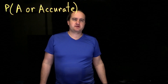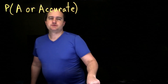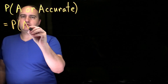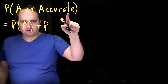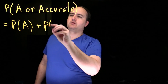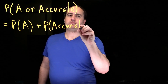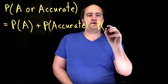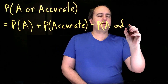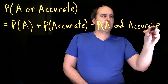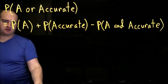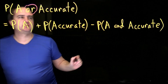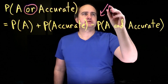The way most people would do this is using the addition rule from the previous video. The addition rule says: the probability of A or B equals the probability of A plus the probability of B minus the probability of A and B — to avoid double counting. So here, that's the probability of A plus the probability of accurate, minus the probability of A and accurate. Remember, when they use the word 'or,' that's when you use the addition rule.